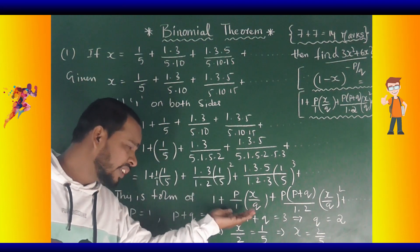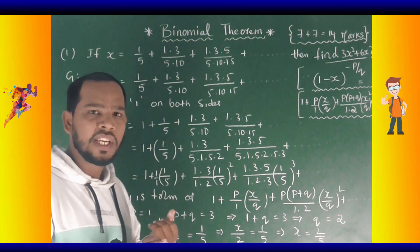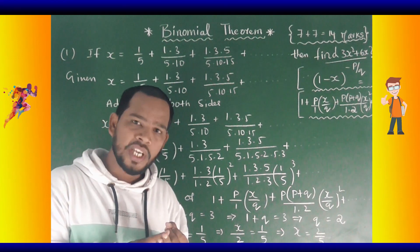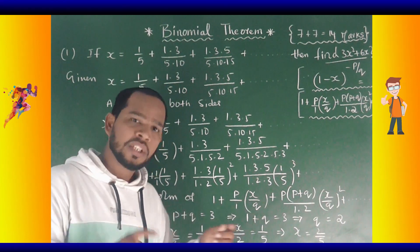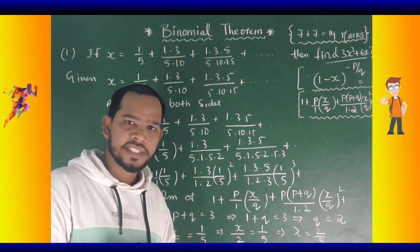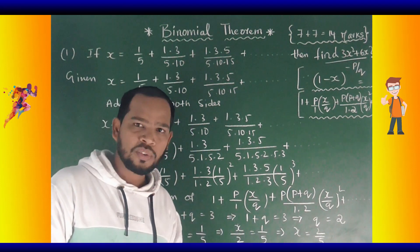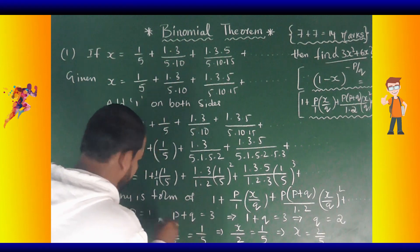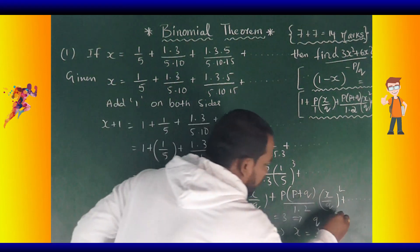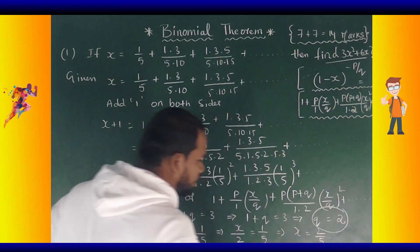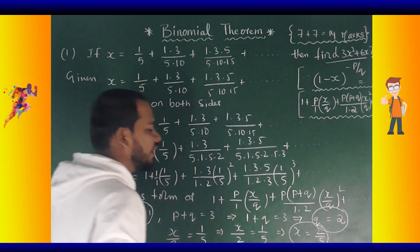We now know the p value, q value, and x value. p equals 1, q equals 2, and x equals 2 by 5.